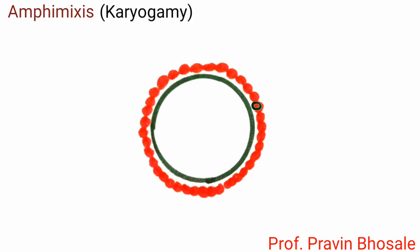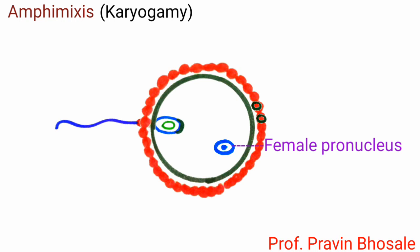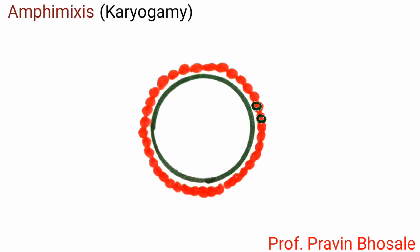The entry of the sperm stimulates the secondary oocyte to complete meiosis. This is the end of oogenesis, and the second polar body is released. Now the nucleus of the secondary oocyte becomes the female pro-nucleus. At this time, the head of the sperm gets detached from the middle piece and tail, and the sperm nucleus is called the male pro-nucleus.